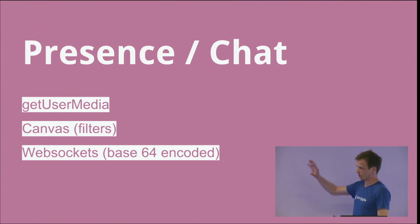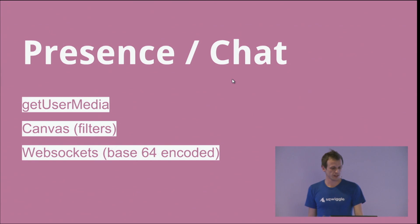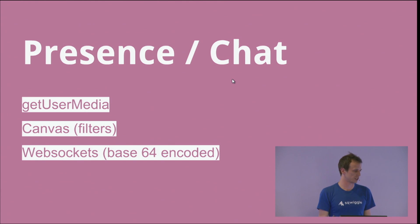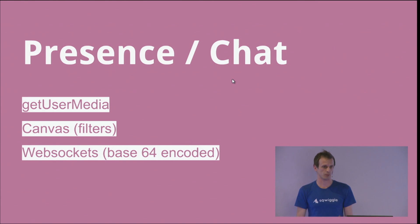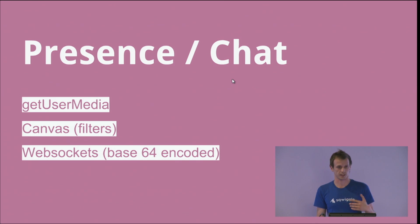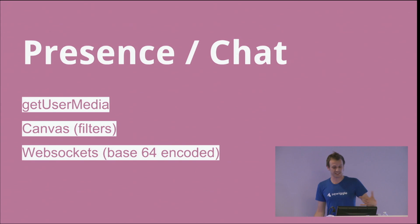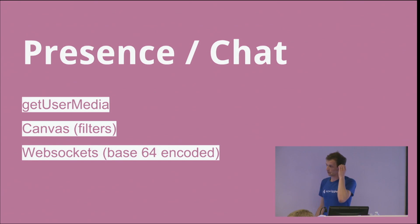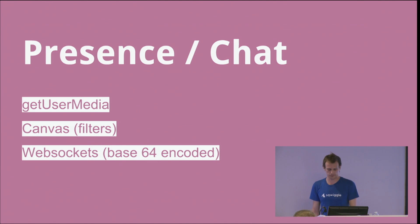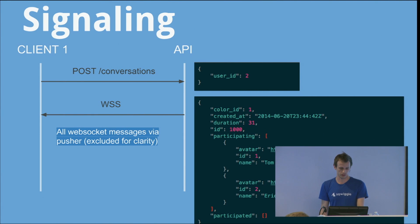For the presence system, we use getUserMedia to capture the camera, chuck it into a canvas, and it's intelligent — usually about every 15 seconds, but going up to a minute or three minutes. If there's just an empty chair, we don't send the picture. On canvas we can do all sorts of filters — we filter people for privacy, like a honeycomb filter so you can see someone's there but can't see if they're picking their nose. Then we encode the image and shoot it over WebSockets. It's amazing what you can fit in 10KB when you use WebP, which is what we use. The chat is the same — all over WebSockets with a Rails backend.